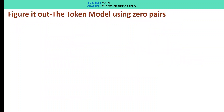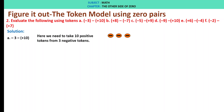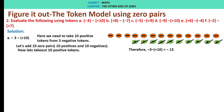Question 2: evaluate the following using tokens. A: minus 3 minus of plus 10. We have 3 negative tokens and need to take 10 positive tokens from them. Let us add 10 zero pairs — 10 positive and 10 negative. We take out 10 positive tokens and are left with 13 negative tokens. Therefore, minus 3 minus of plus 10 is minus 13.